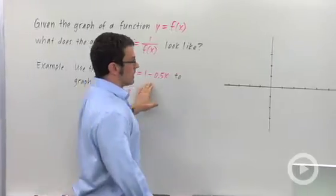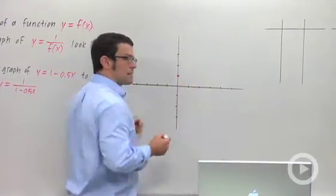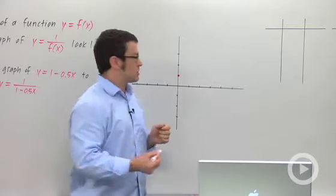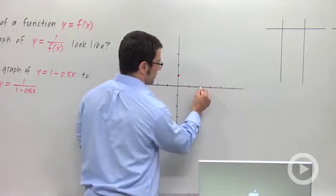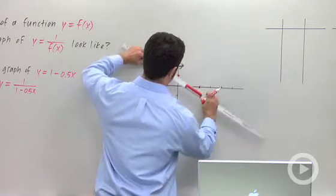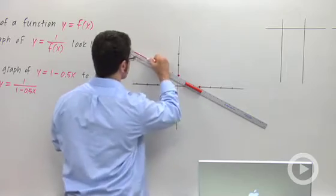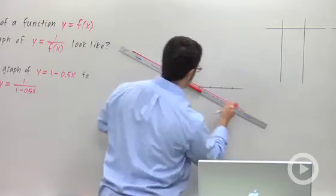And that's pretty easy, right? This is going to be a line with y intercept 1 and slope negative 1 half. So it's going to go down 1 over 2. And when you have two points for a line, you can graph the line immediately. So let's graph it. So that's our line.